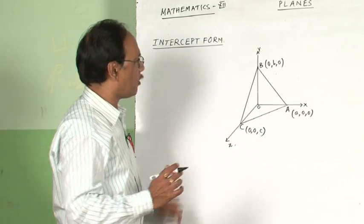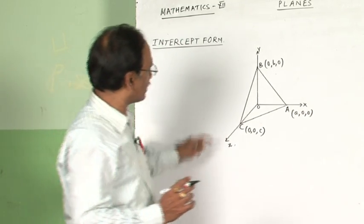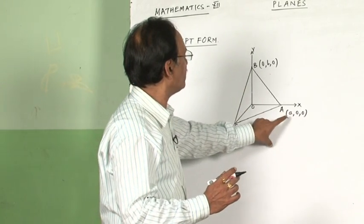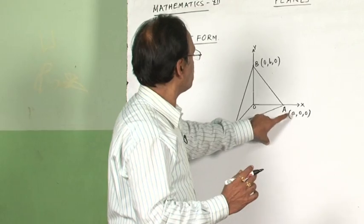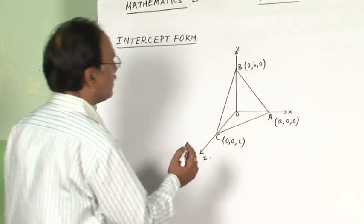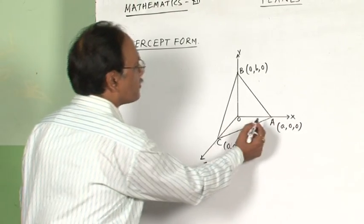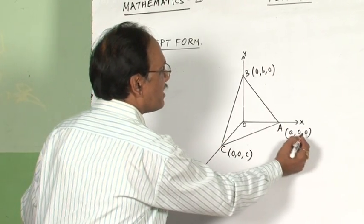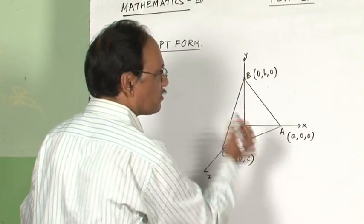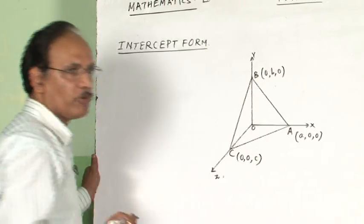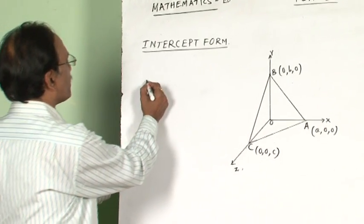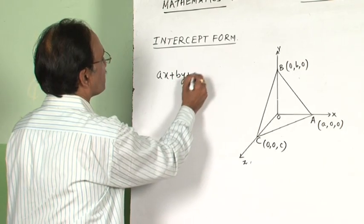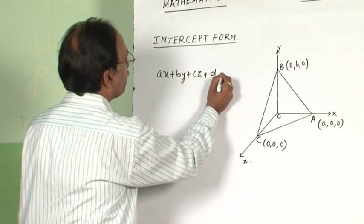Equations of the plane in the intercept form. Suppose a plane is cutting intercepts on x-axis, y-axis and z-axis respectively A, B, C. Then the points of intersection of the plane on x-axis, y-axis and z-axis can be given by (A,0,0), (0,B,0), (0,0,C). Now we will take the general equation of the plane which is Ax + By + Cz + D = 0.